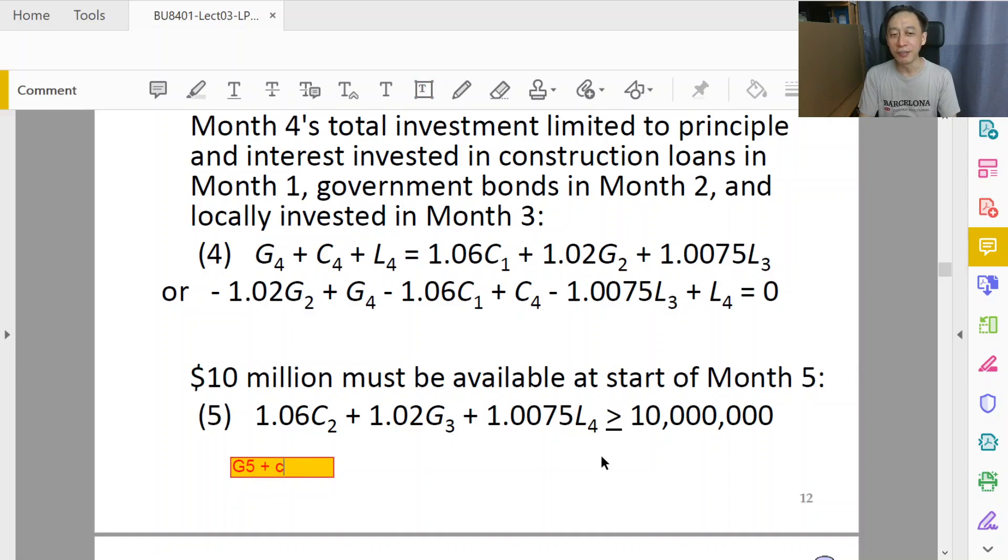So the start of the fifth month, you can think of it as if we had to plan for amount of investments for G5, C5, and L5. Then the right-hand side would have to be an expression telling us the money available at the start of the fifth month or at the end of the fourth month.